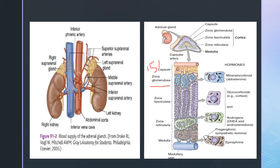The cells of zona glomerulosa are small with a moderate number of lipid inclusions in the cytoplasm, and the nuclei are smaller compared to the other two zones. The layers can be remembered using the mnemonic GFR — from superficial to deep: G for glomerulosa, F for fasciculata, R for reticularis. Zona glomerulosa constitutes 15% of the adrenal cortex and secretes mineralocorticoid.